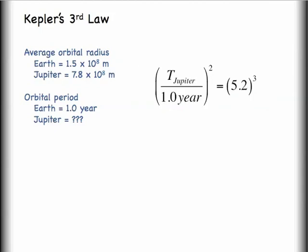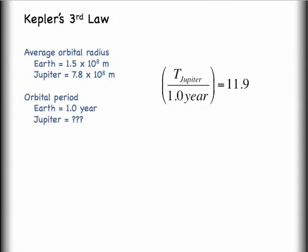If I simplify this down a little bit, I have 5.2 cubed. It's going to be about 140.6. Then I'm going to square root both sides. That's where the 11.9 comes from. Multiply the 1.0 years over to the right. That's where my unit of years comes from. And I can say that the orbital period of Jupiter is 11.9 years.